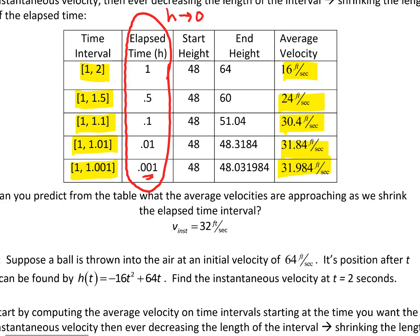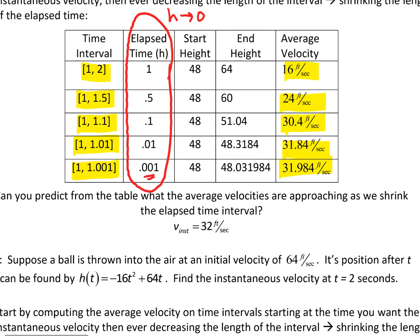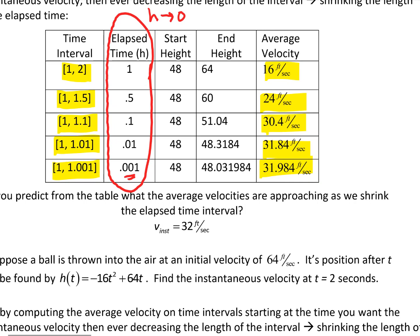We can predict from the table that the instantaneous velocity is 32 feet per second. In limit notation, we say the limit of the average velocities as the elapsed time H goes to zero equals the instantaneous velocity — and the instantaneous velocity in this case is 32 feet per second.